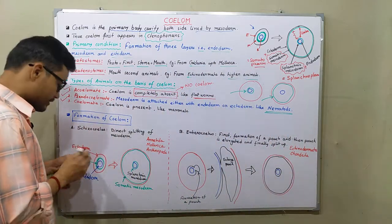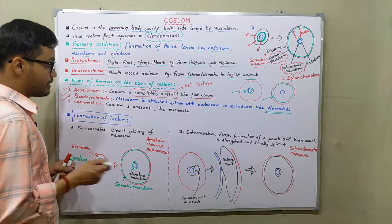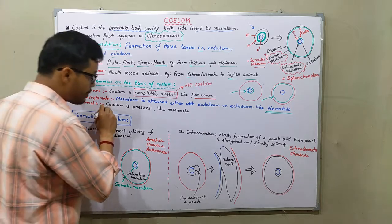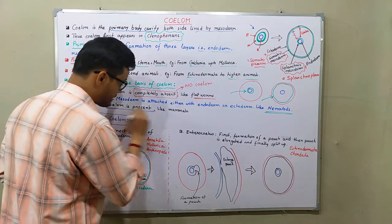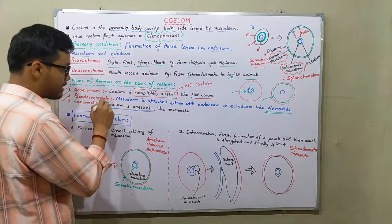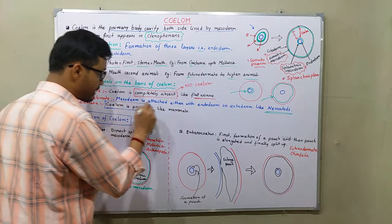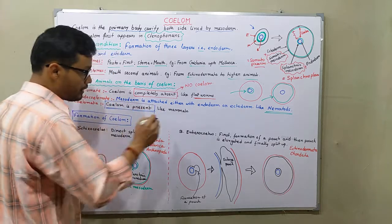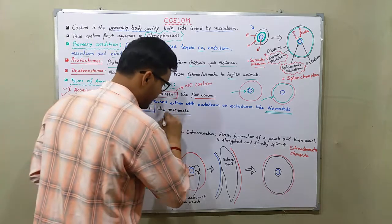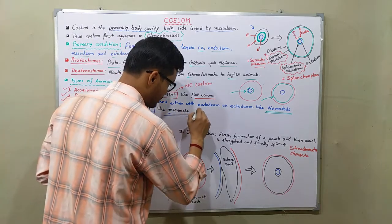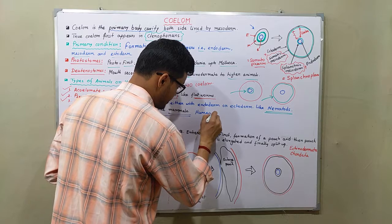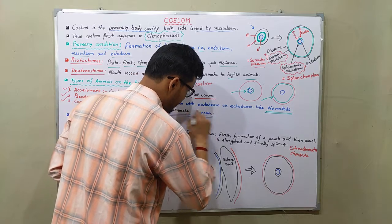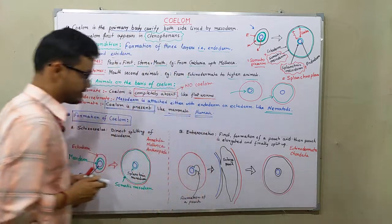The third type is the coelomate. In coelomate animals, the coelom is distinctly present. Examples include mammals and humans. In this case, the coelom is completely and properly present.